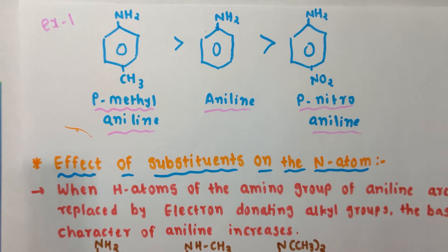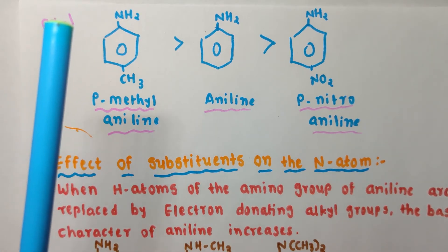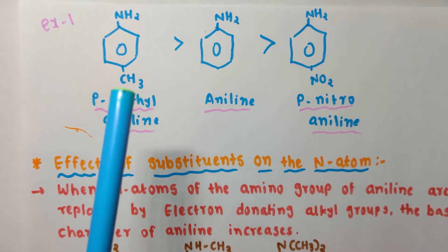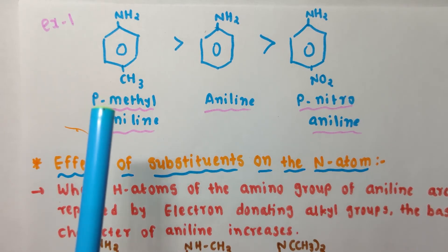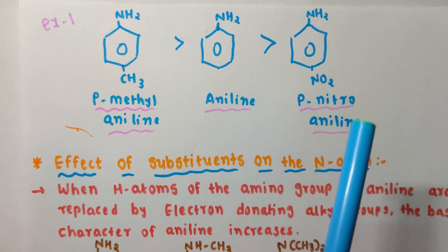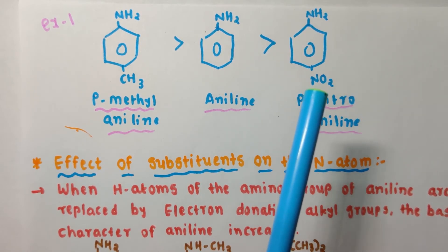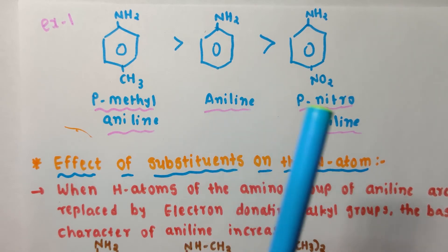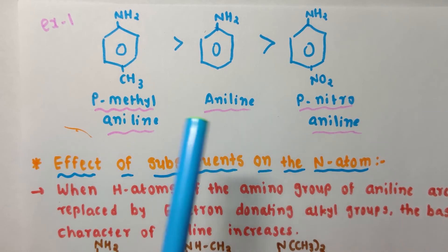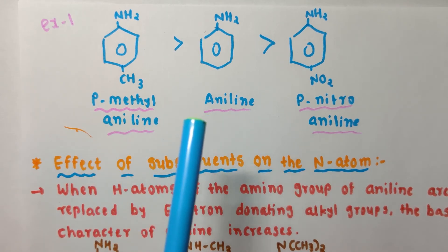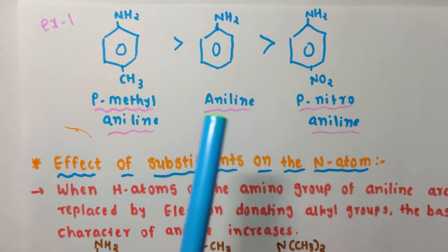To summarize the effect of substituents on the benzene ring: anilines with electron donating groups are stronger bases than aniline, and anilines with electron withdrawing groups are weaker bases than aniline. The order of basic strength follows: EDG-substituted aniline > aniline > EWG-substituted aniline.